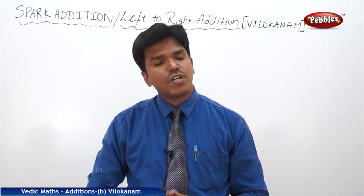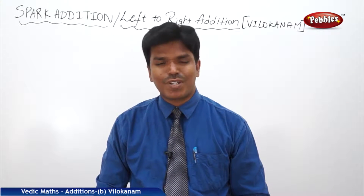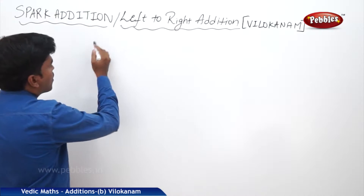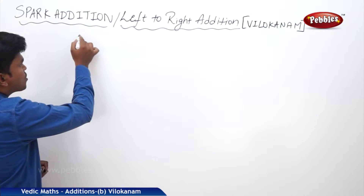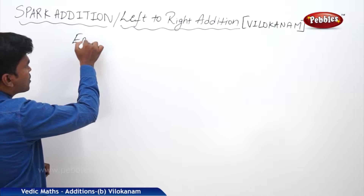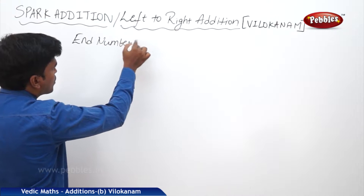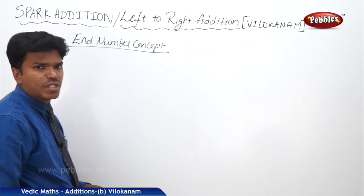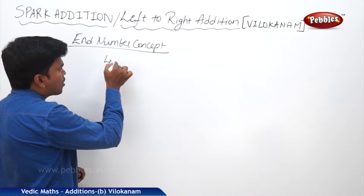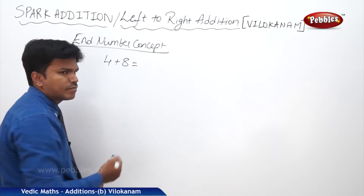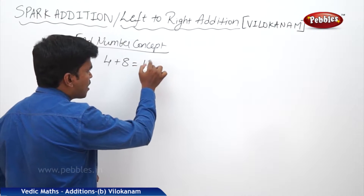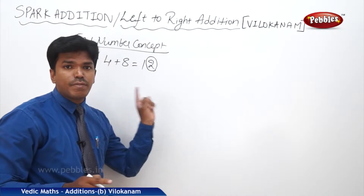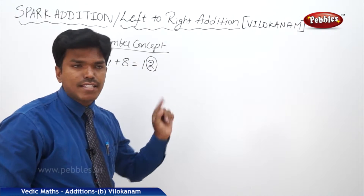Let us see the concept of spark addition using Vilokanam Sutra. We will get two concepts. The first concept is the end number concept. For example, let us add 4 plus 8, which is 12. In this 12, the digit 2 — that is the ones-place digit — we will consider as the end number.